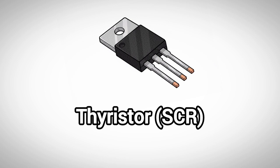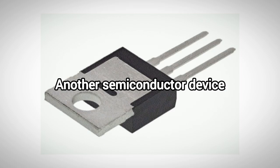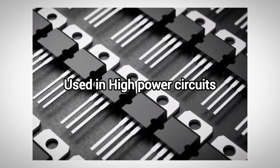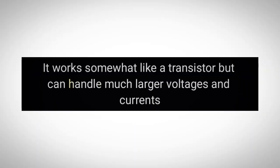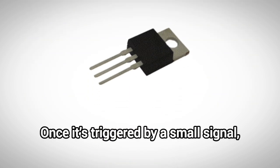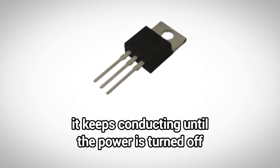Next up, we have the Thyristor, also known as the Silicon Controlled Rectifier, or SCR. It's another type of semiconductor device used mainly in high-power circuits. It works somewhat like a transistor, but can handle much larger voltages and currents. Once it's triggered by a small signal, it keeps conducting until the power is turned off.